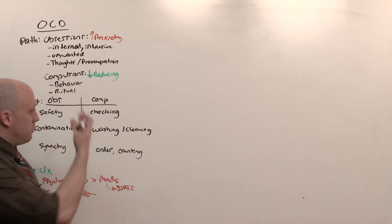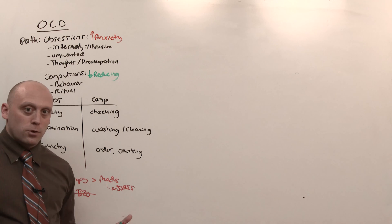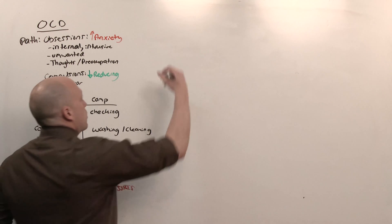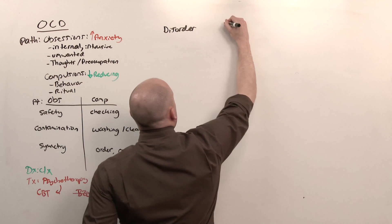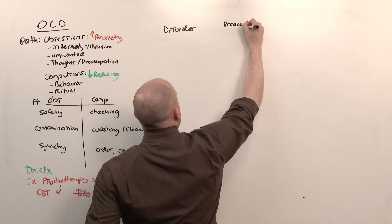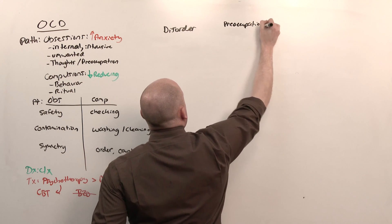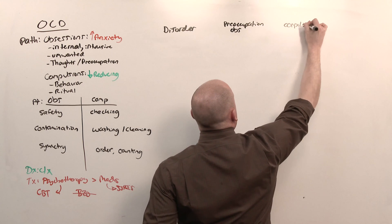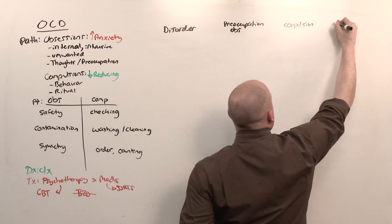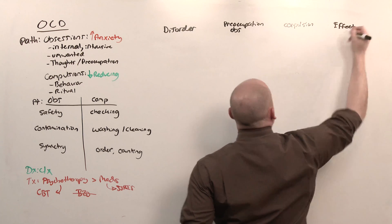If you understand this part of the lesson, you're gold. Let's talk about some of the related disorders in terms of the disorder itself. What the preoccupation is, or the obsession, what the compulsion ends up being, and what effect that has on the patient.